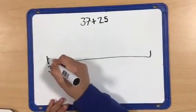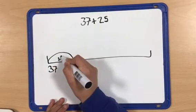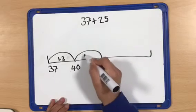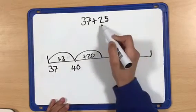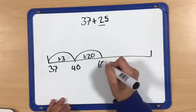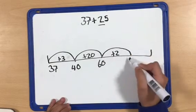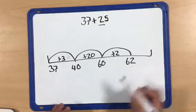First I will add 3 to round it off to 40. Then I will add 20, since there's two tens in 25. Now that I've added 23, I need two more to add 25, which gives 62.